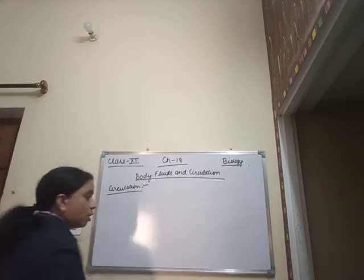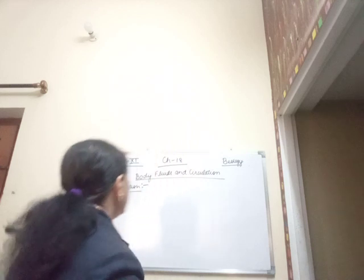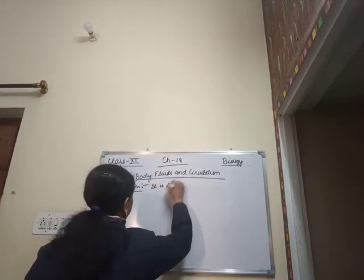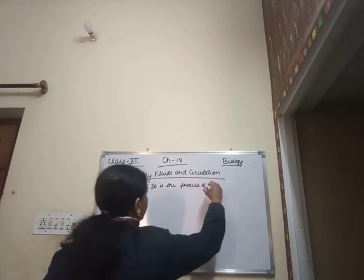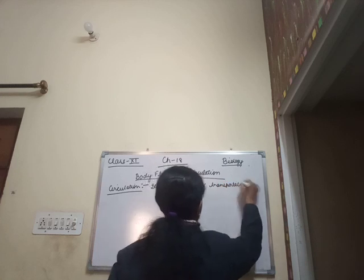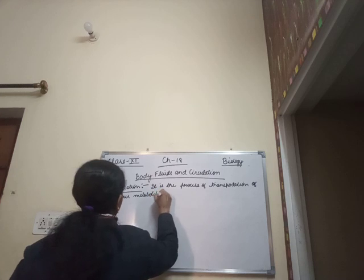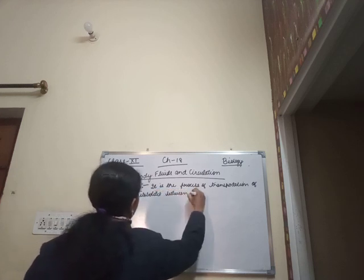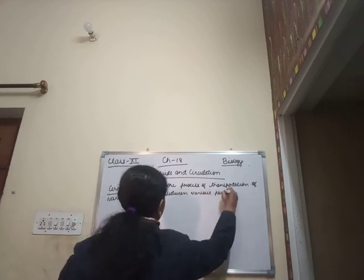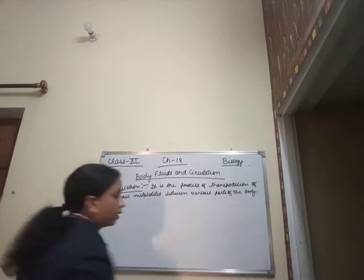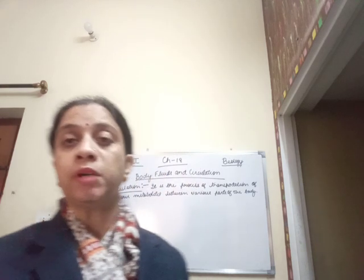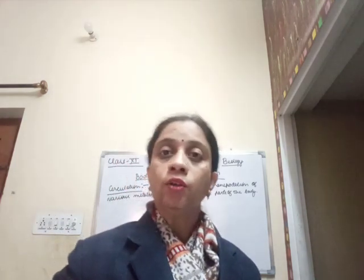Circulation is a process wherein transportation of various metabolites takes place between various parts of the body. The various metabolites included in this transportation system are various kinds of nutrients, various gases, hormones, antibodies, and so on.